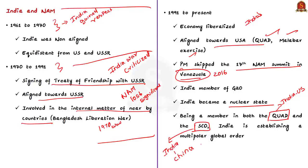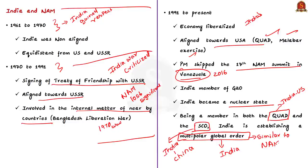India is striving hard for a multipolar world order and asserting itself as one of the key players. A multipolar world order according to India is very similar to the earlier principles of NAM. So India is denying the claims that it has abandoned non-alignment and is still focused on the principles of the non-aligned movement.